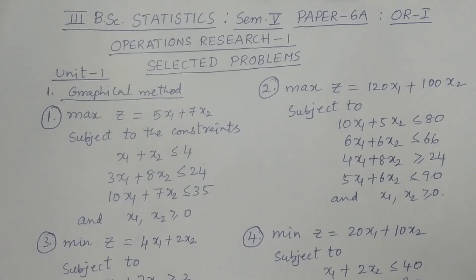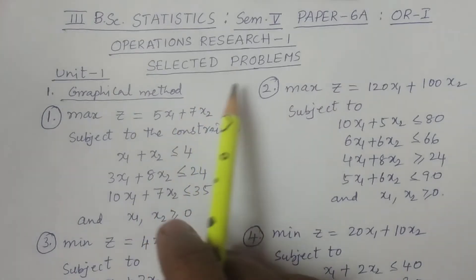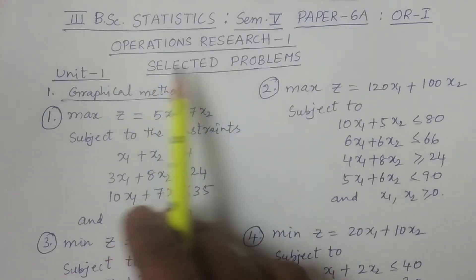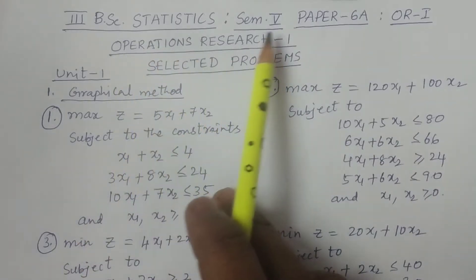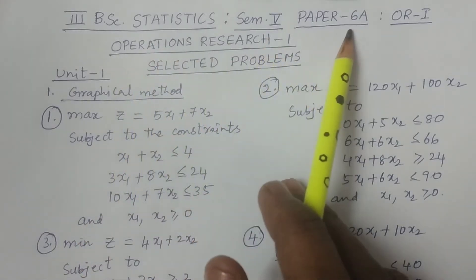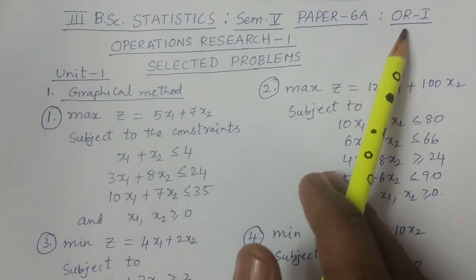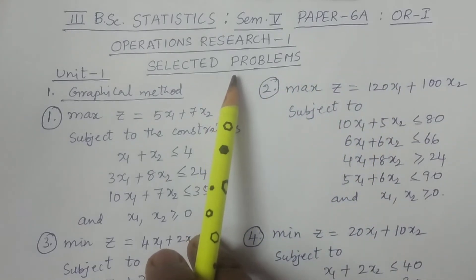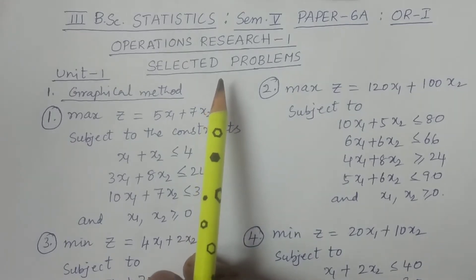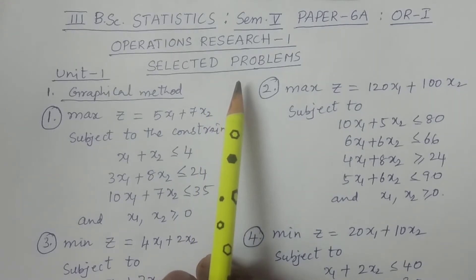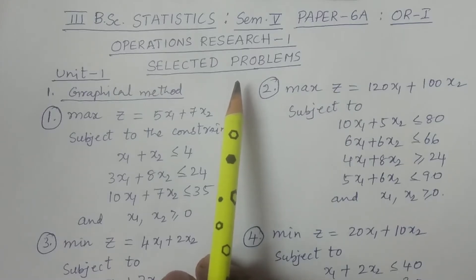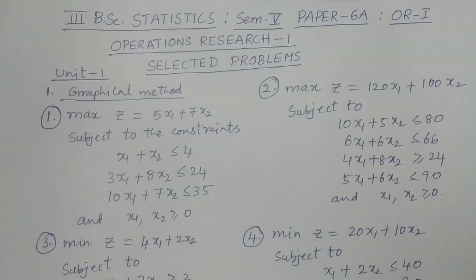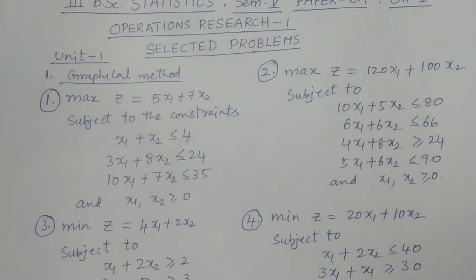Welcome to BSc Statistics students. In this class I explain some of the selected problems in Operations Research 1 of final BSc semester 5, paper 6A. I will tell you for university examination some selected problems. If you do these problems, you can attempt almost 90% of the problems in the examination. These are very important problems I am discussing here.